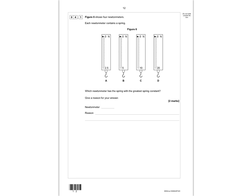Question 4.1: figure 6 shows four newtonmeters, each containing a spring. Which has the greatest spring constant? Newtonmeter D goes from 0 to 20 N, so it needs 20 newtons to extend the spring by the same distance as the others. It requires a greater force per given extension — which is what spring constant is: force divided by extension. The answer is D, and the reason is it requires a greater force to provide the same extension. Note: if you select the wrong spring, no marks are awarded.